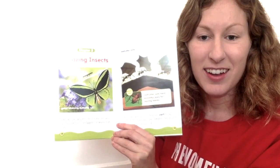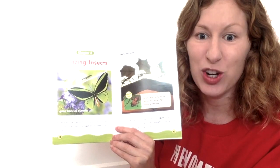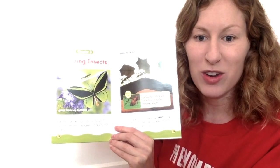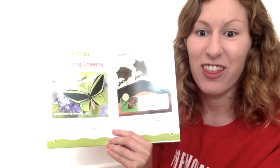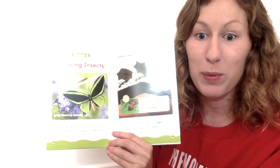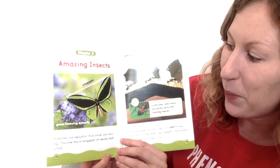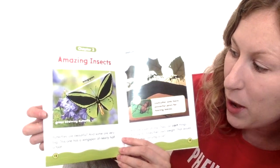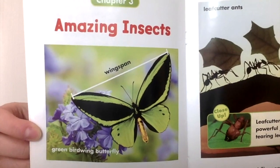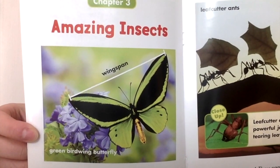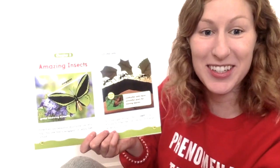After this read aloud, I want you to go look at your mom or your dad or your grandmother or grandpa's foot — any adult in your house — and think that a butterfly's wingspan could be half an adult's foot. Now this butterfly is called a green birdwing butterfly. Can anyone guess why it's called a green birdwing butterfly? Because it's green.